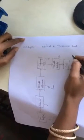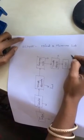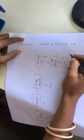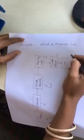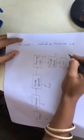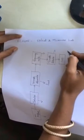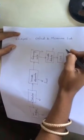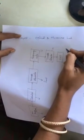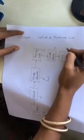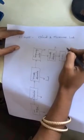Lab code is EC2405, optical and microwave lab. In this lab, optical and microwave experiments are conducted in order to verify the characteristics of microwave components and also to study the characteristics of optical fibers. Before doing experiments, we should study the characteristics of components used in the lab.